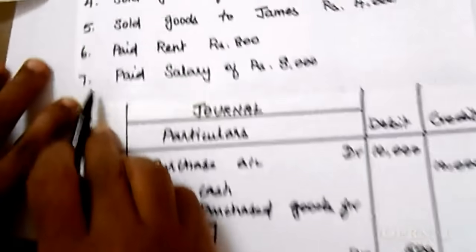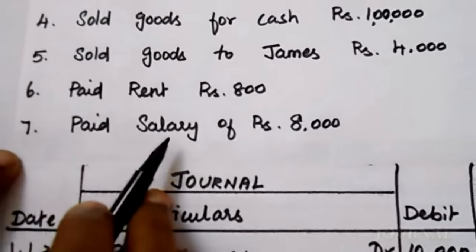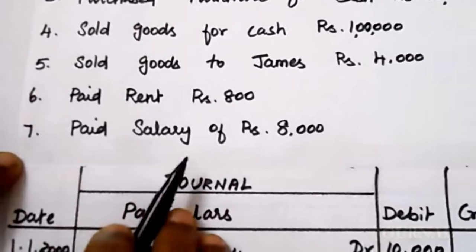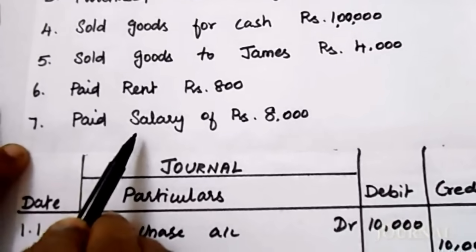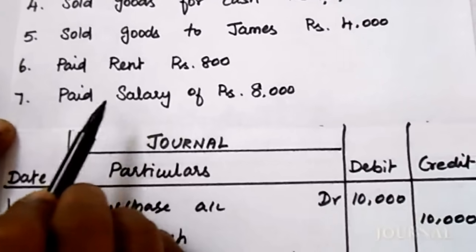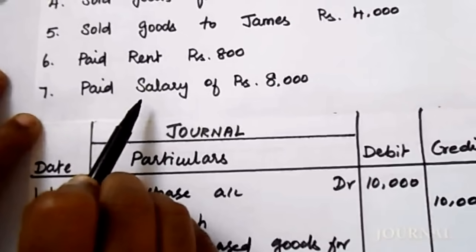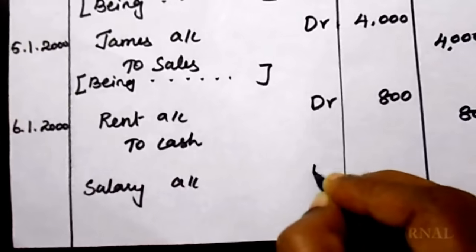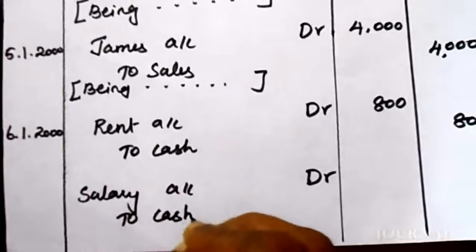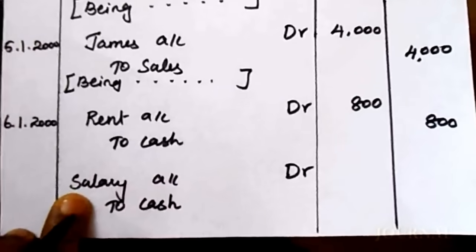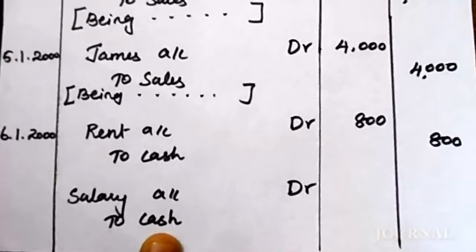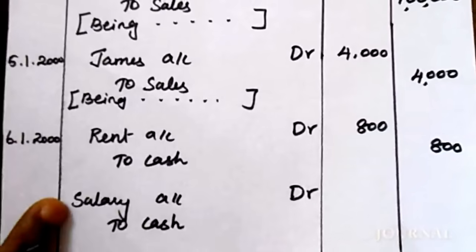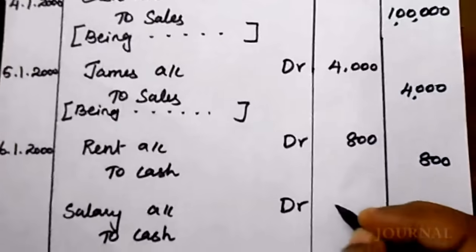On 7th January 2000, paid salary of 8,000 rupees. Just like the previous transaction for rent, salary is also an expense for the business. Any expense is a nominal account, and the rule is debit all expenses. Cash is a real account — when you pay salary, cash goes out, so credit cash. Entry: salary account debit to cash — 8,000 rupees.